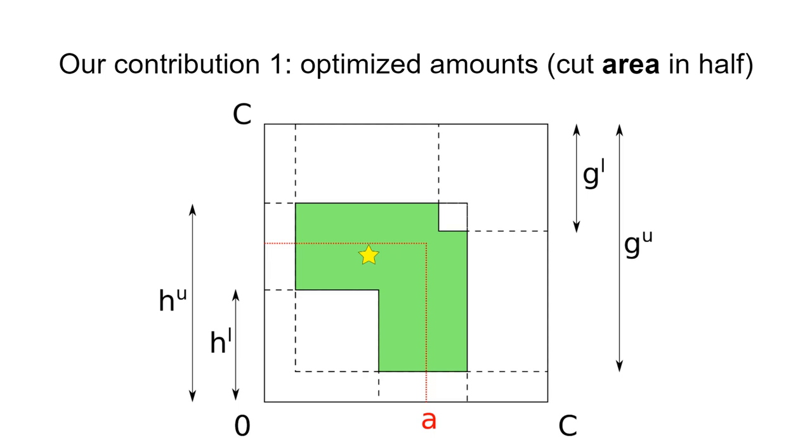The first of our contributions here is the following. We suggest using an optimized amount selection algorithm, namely to choose the next probe amount, A, in such a way that it cuts the area of the colored figure in half. Therefore, we generalize the binary search pattern for the n-dimensional space, which makes probing more efficient.